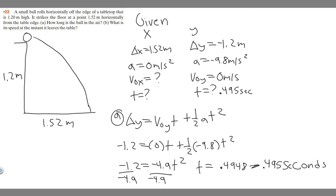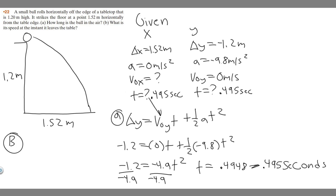For Part B, we need the speed at the instant the ball leaves the table. Since it's going horizontally, we just focus on the x direction — there's no y component. Now that we know time is 0.495 seconds, we can solve for v sub 0x, since we have every other variable in the equation.